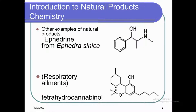Another example of a natural product is ephedrine, which is extracted from Ephedra sinica — a plant that produces this compound. It is a drug used for respiratory conditions. Tetrahydrocannabinol (THC) is also a medicinally important compound obtained from certain plants. Plants are a rich source of organic compounds, and the compounds obtained from plants are mostly bioactive.